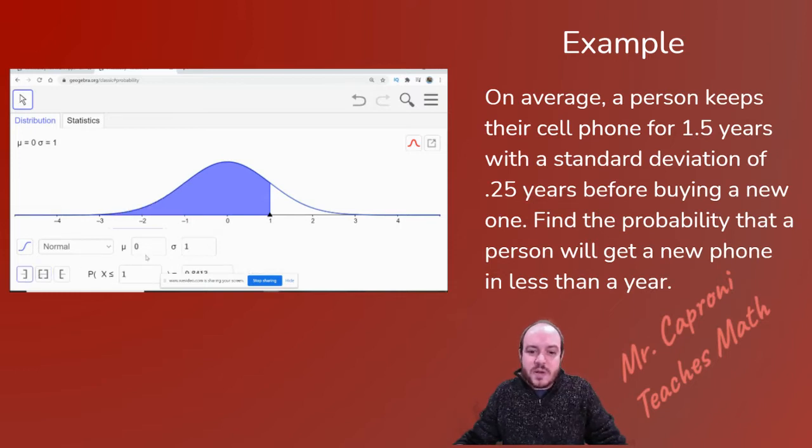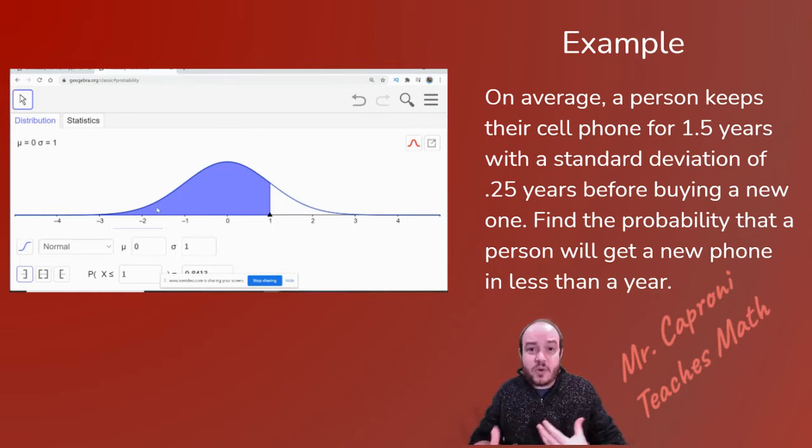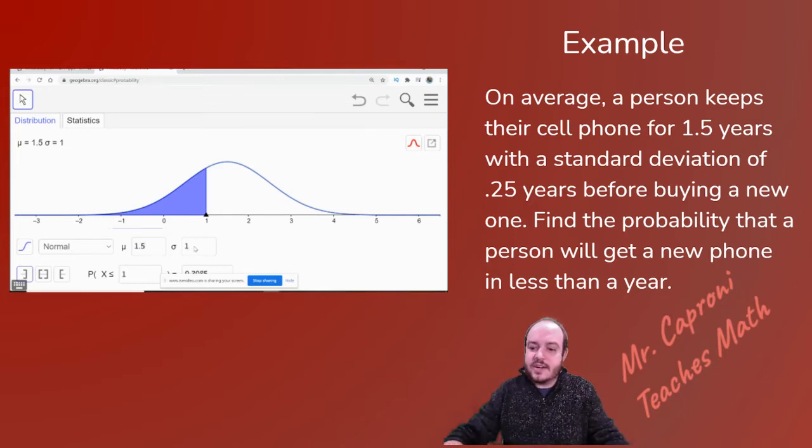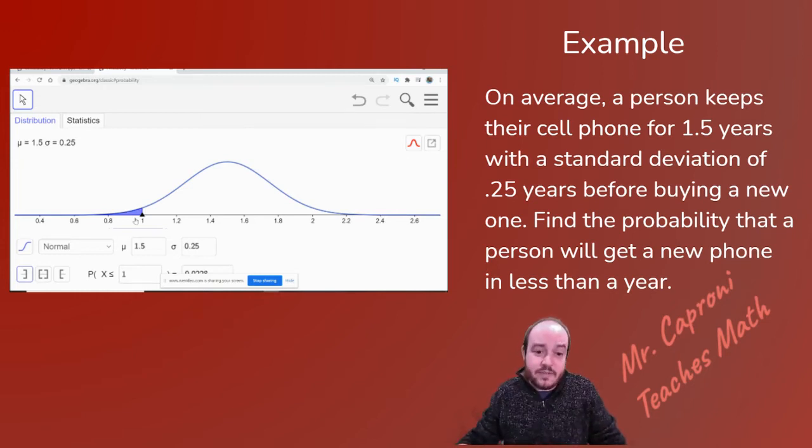So let's go ahead and start by putting in the information from this question up above. This question tells us that on average, a person has their cell phone for a year and a half before they go ahead and get a new one with a standard deviation of about a quarter, so 0.25. So let's go ahead and plug that in. We got our year and a half, so 1.5, and we have our standard deviation of 0.25. Once we have that in, you'll notice it plugged it into the formula for us and generated the curve that we need. Now we need to tell it what range we actually want to find the area for.